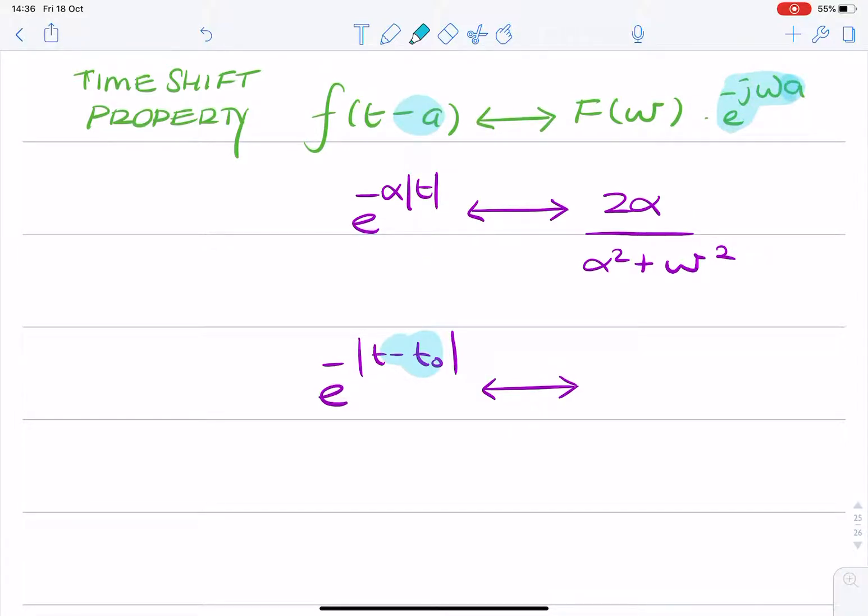It's a phase term, e to the power minus j omega a, where a is your phase shift.